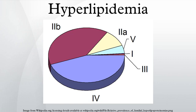Hyperlipidemias may be classified as either familial, caused by specific genetic abnormalities, or acquired, when resulting from another underlying disorder that leads to alterations in plasma lipid and lipoprotein metabolism. Hyperlipidemia may also be idiopathic, that is, without known cause. Hyperlipidemias are also classified according to which types of lipids are elevated — that is, hypercholesterolemia, hypertriglyceridemia, or both in combined hyperlipidemia. Elevated levels of lipoprotein A may also be classified as a form of hyperlipidemia.